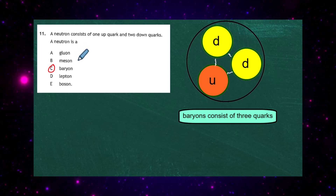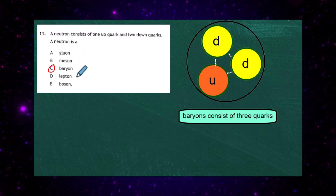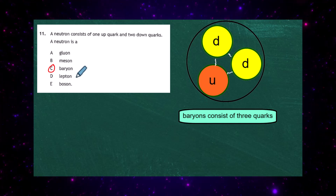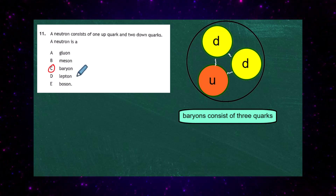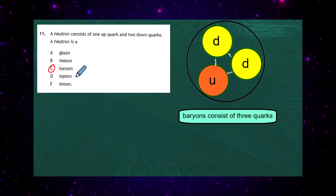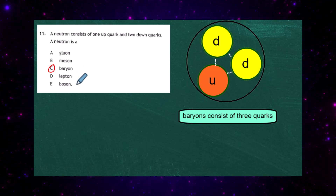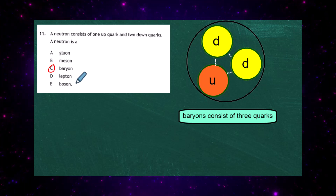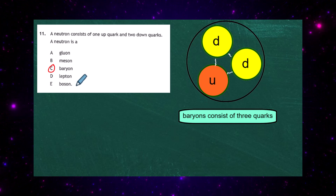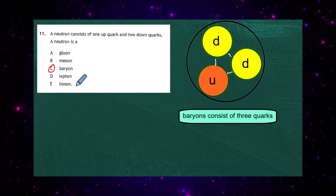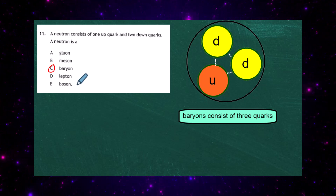A meson is a particle made up of a quark and an antiquark. A lepton is the family which contains the electron and the neutrinos. A boson is the mediating particle for the forces. So question 11, our answer is C — it's a baryon, because a neutron has three quarks and that makes it a member of the baryon family.